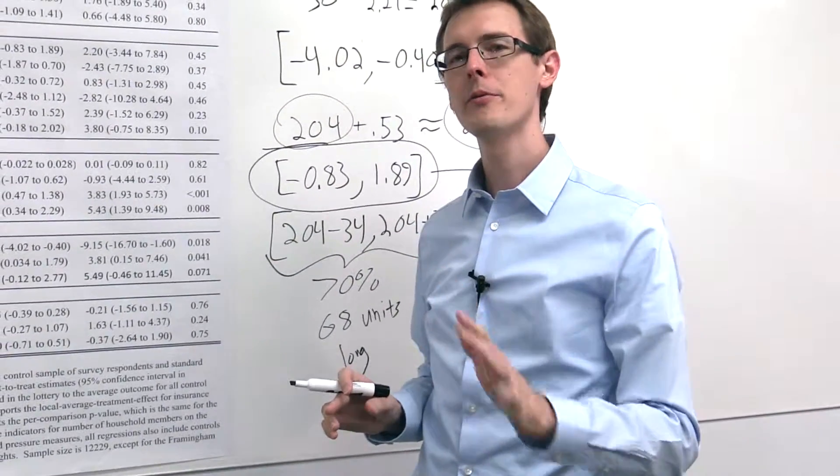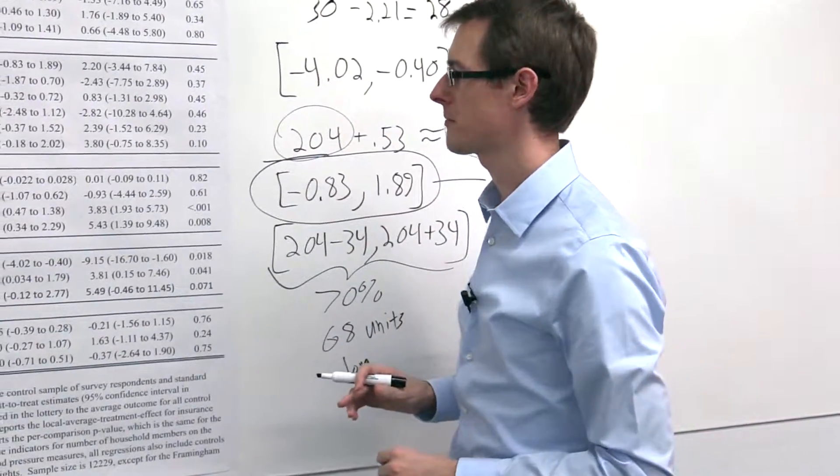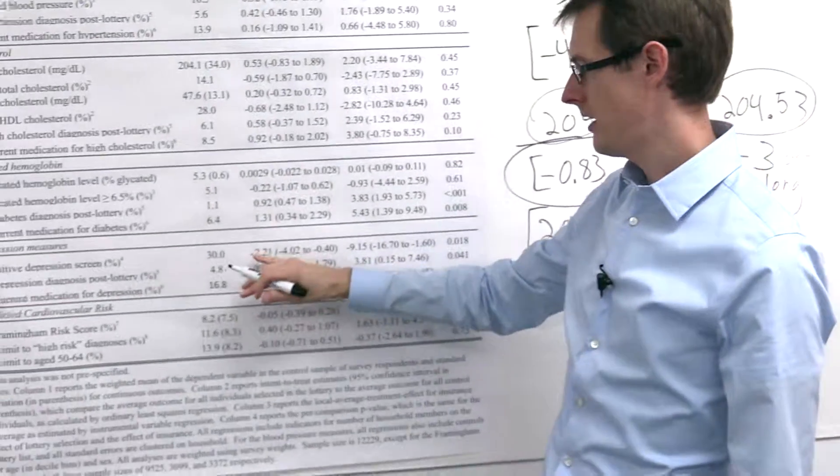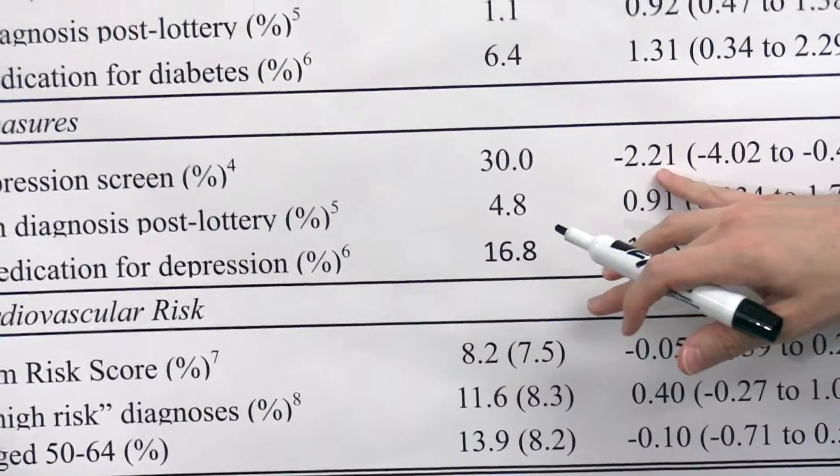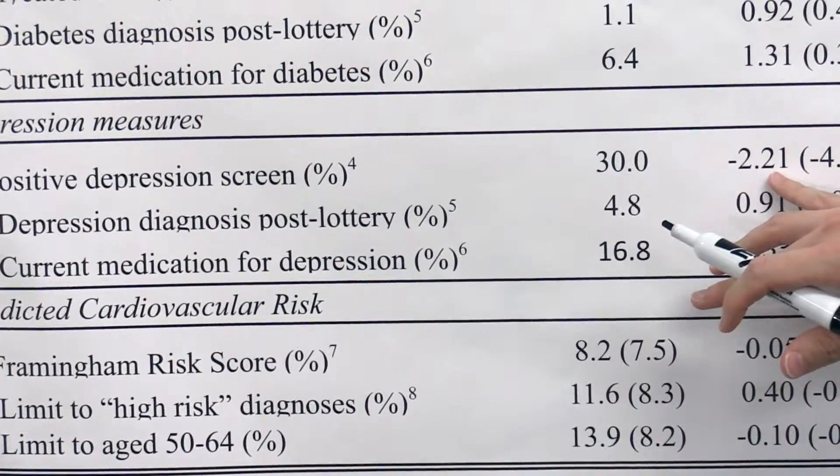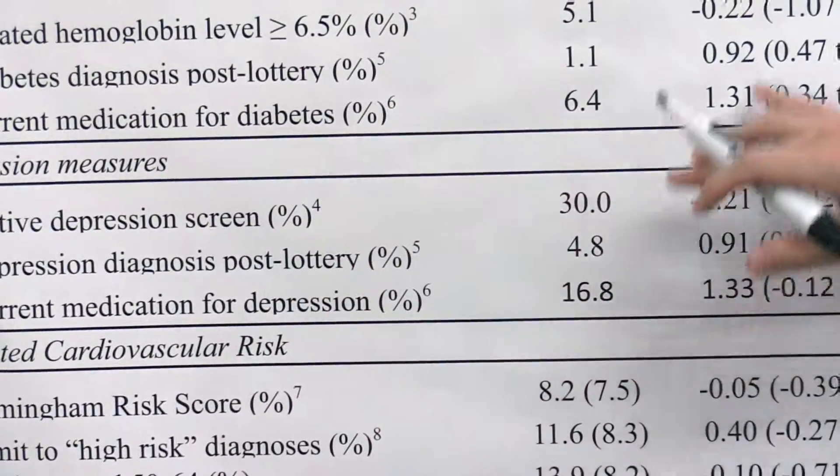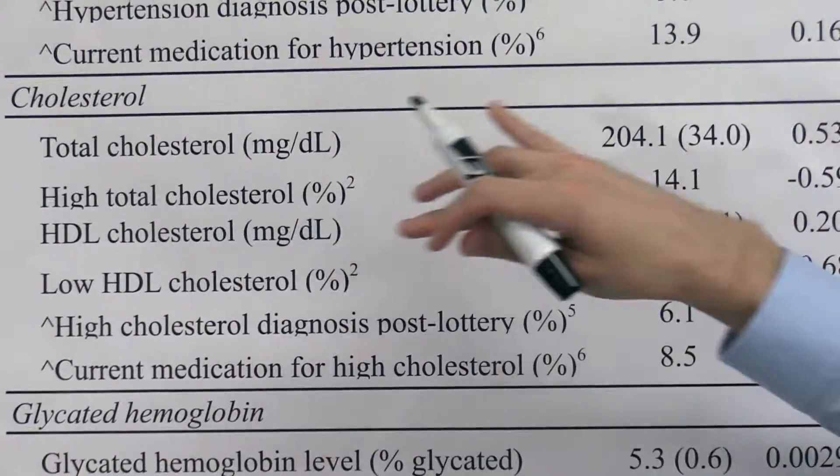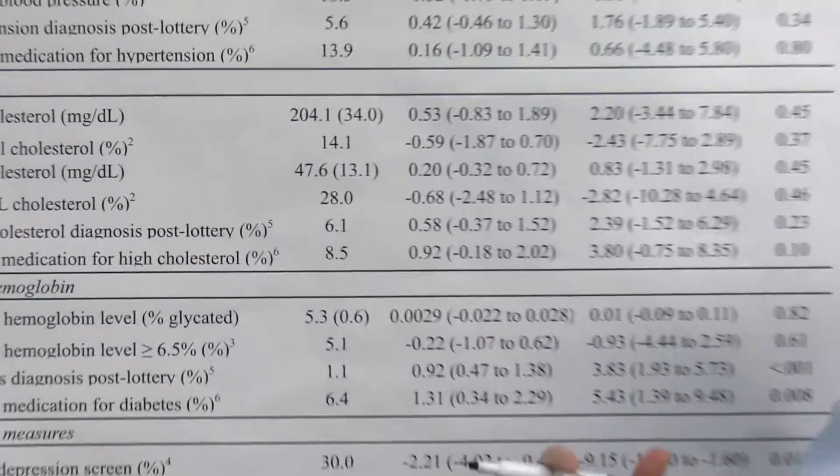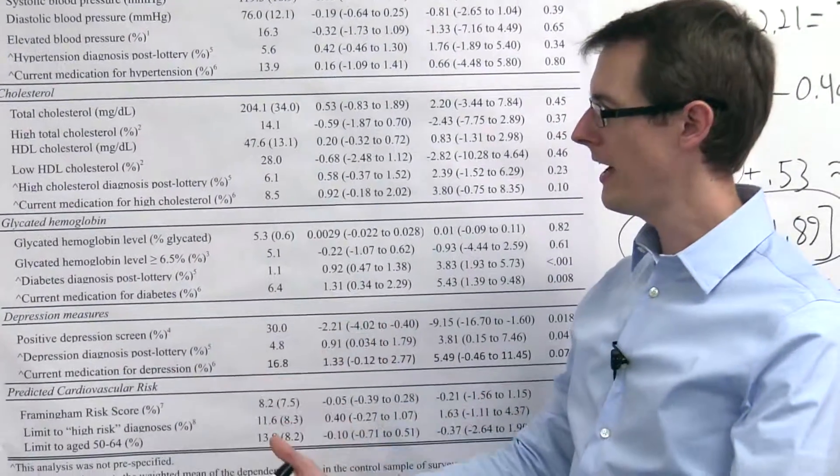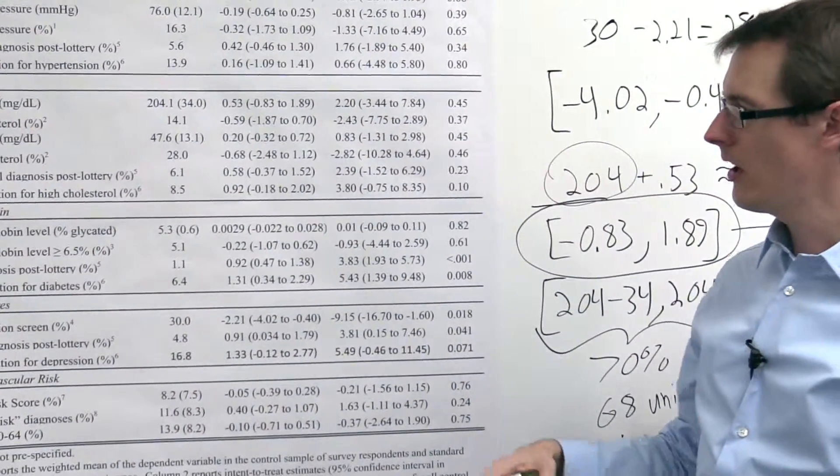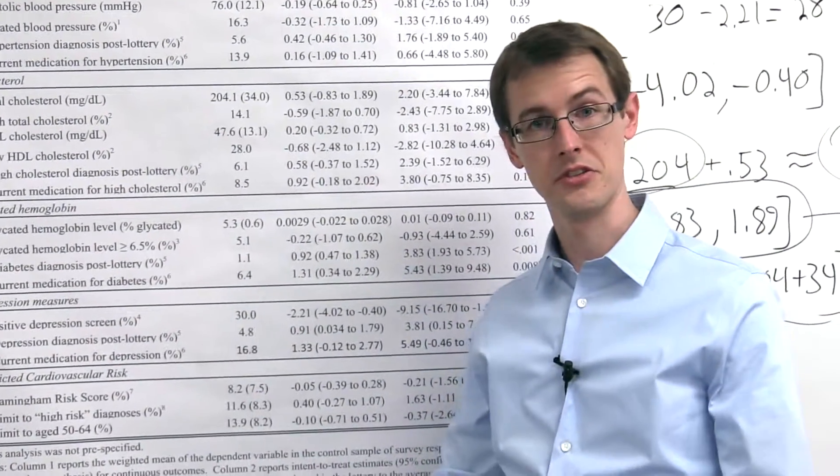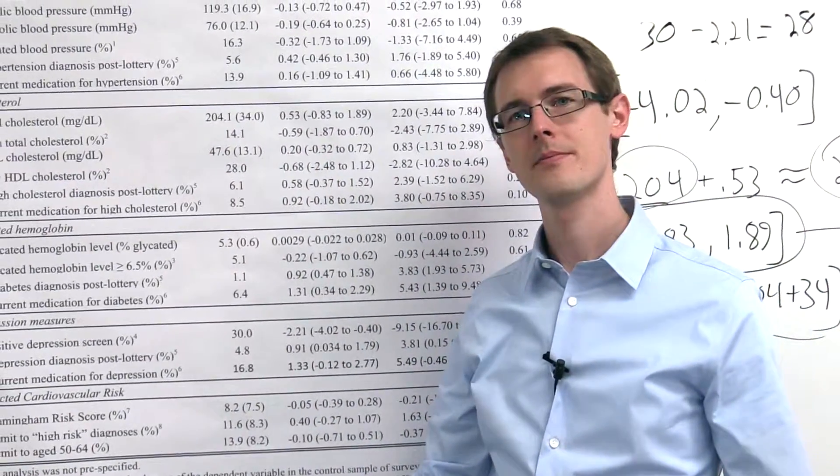So those are the three ways that you can interpret confidence intervals in practice. And every interval in every paper and every research you see will have the same interpretation. So, based on these data that we've seen here, this statistically significant minus 2.21 effect of being in treatment on positive depression screen, and this precisely estimated zero effect of being in treatment on cholesterol, the authors conclude that Medicaid had a positive effect on depression, meaning it lowered depression, that's a good thing, but no effect on total cholesterol.